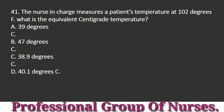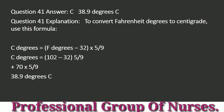Question 41: The nurse in charge measures a patient's temperature at 102 degrees Fahrenheit. What is the equivalent centigrade temperature? a. 39 degrees C. b. 47 degrees C. c. 38.9 degrees C. d. 40.1 degrees C. Answer: c. 38.9 degrees C. Explanation: To convert Fahrenheit to centigrade, use this formula: C degrees = (F degrees - 32) × 5/9. C degrees = (102 - 32) × 5/9 = 70 × 5/9 = 38.9 degrees Celsius.